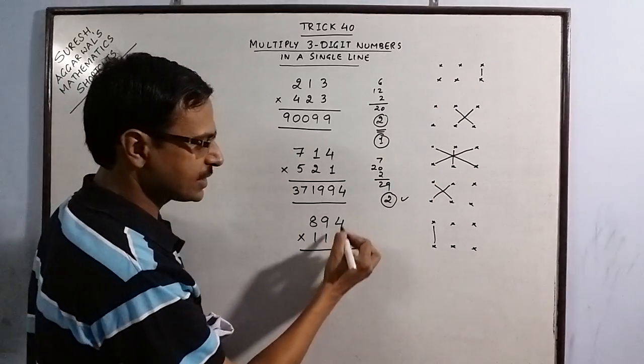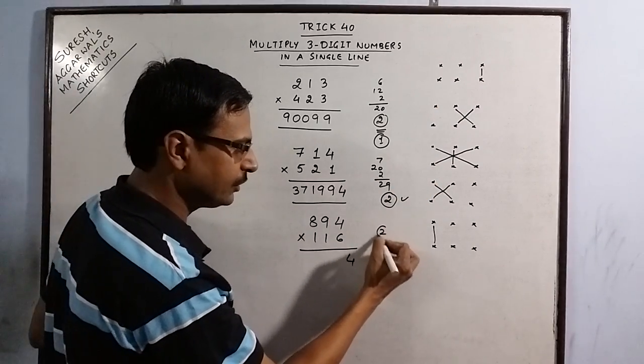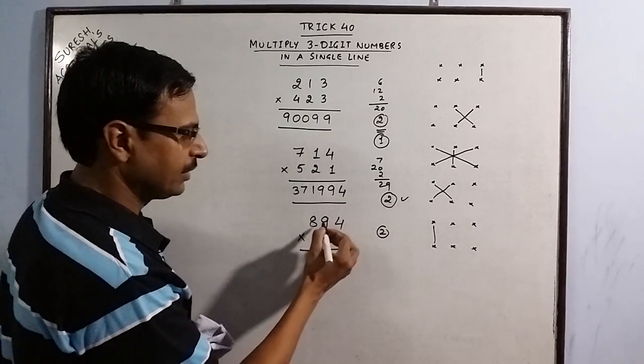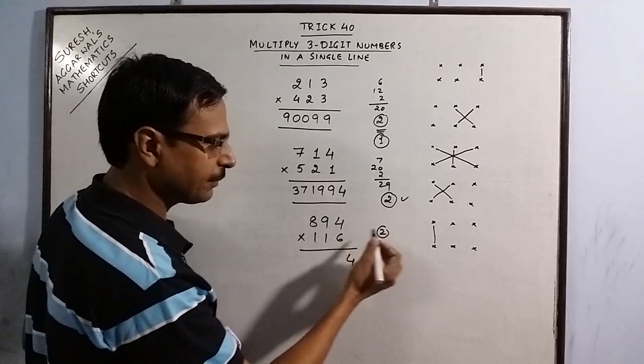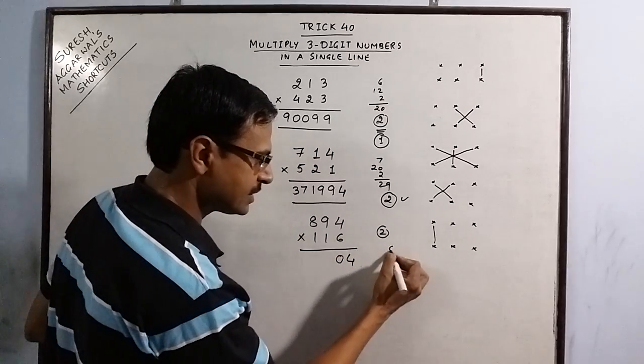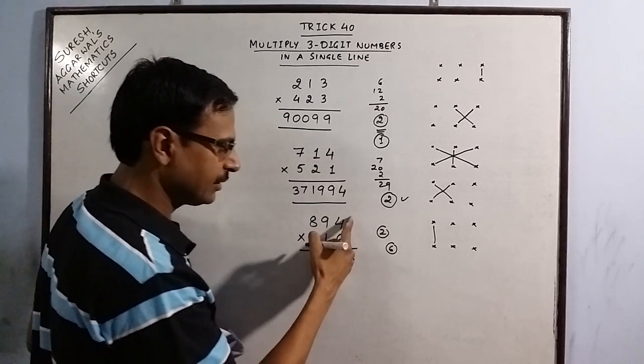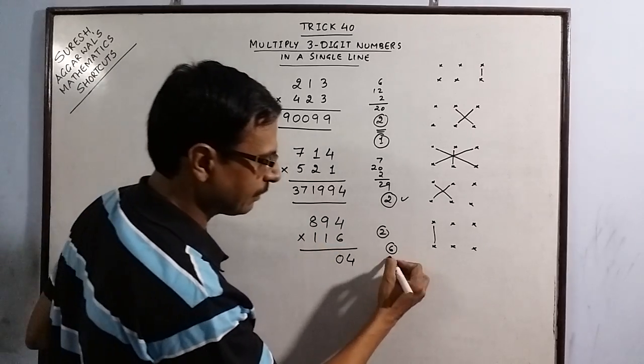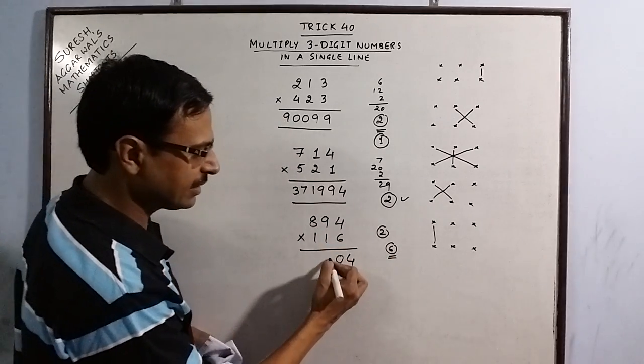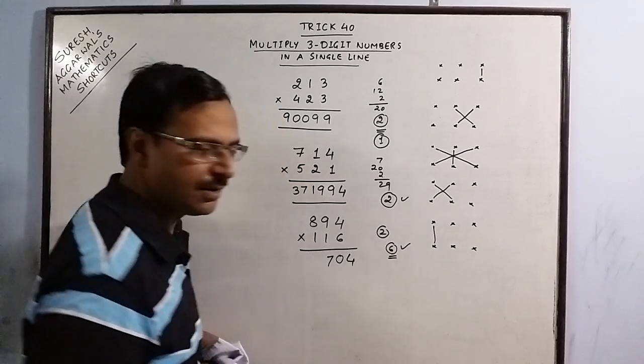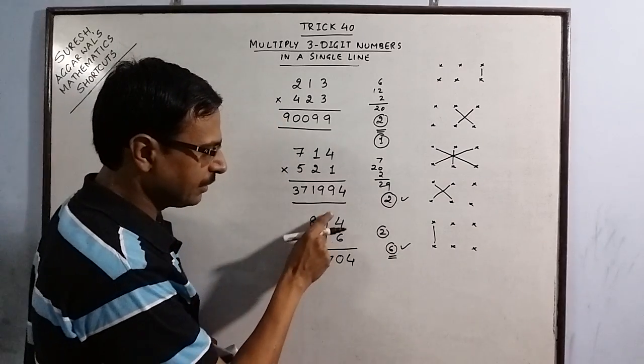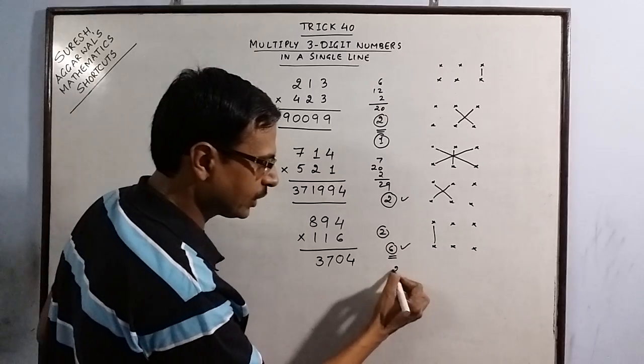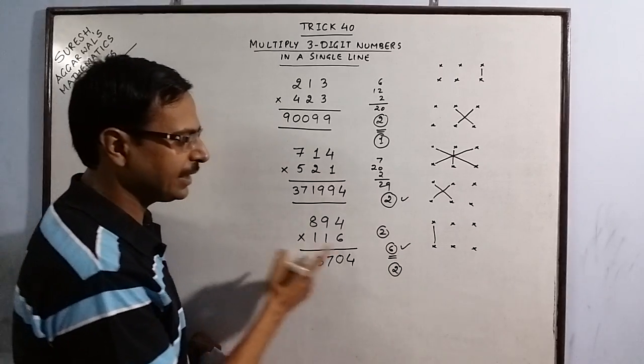First step 6×4 the 24, 4, 2 carry. You have to remember the carry and carry it forward to the next step. 54 plus 4, 58 plus 2, 60, 6 carry. 48 plus 4, 52 plus 9, 61 plus 6, 67 again 6 carry. 8 plus 9, 17 plus 6, 23, 2 carry. And final step 8 plus 2, 10.